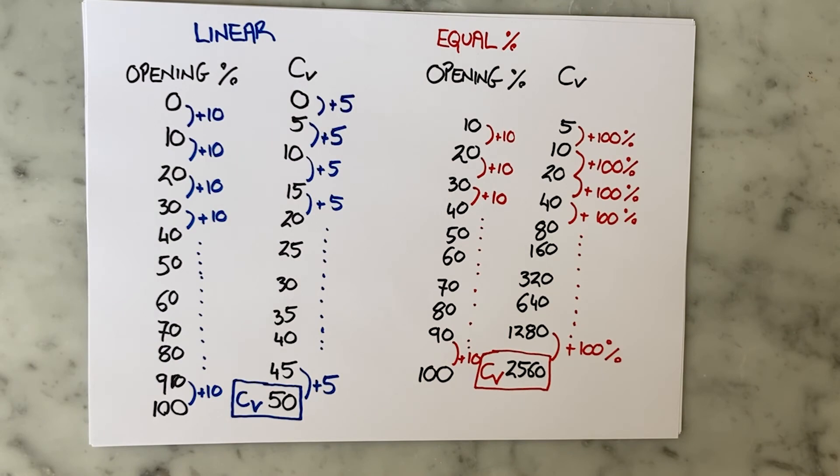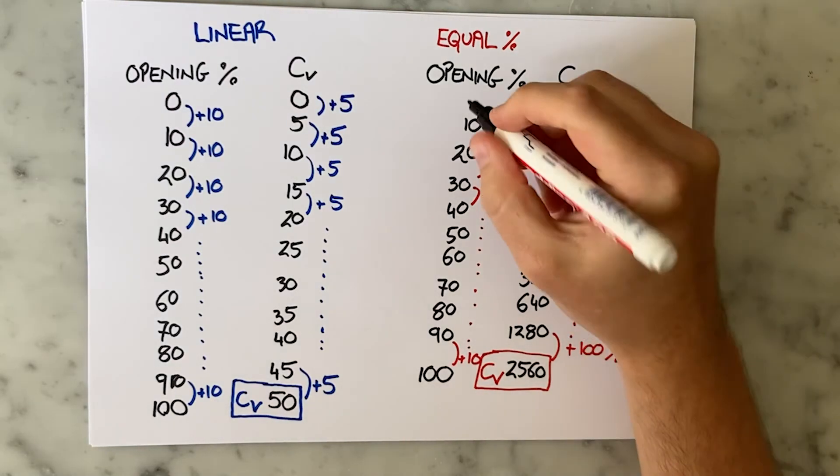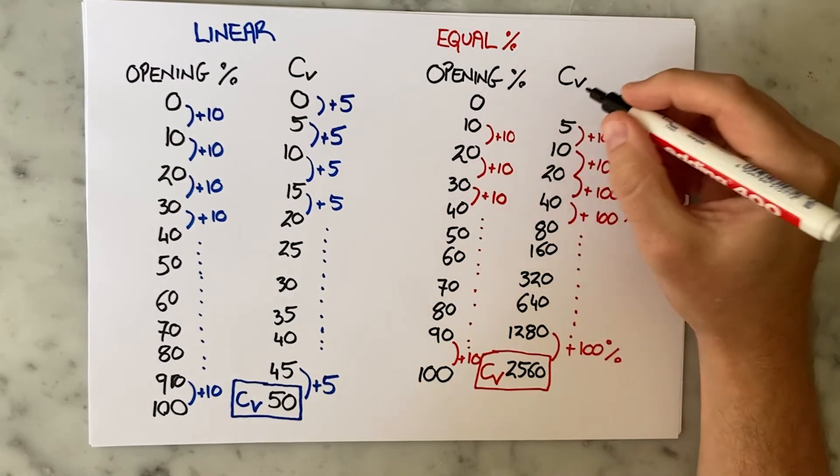But what about the equal percentage valve? Well just like the linear valve had a step change of 5 in CV, I have a step change of 100% of the CV. But assume I started at 0% opening.